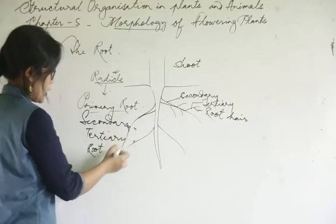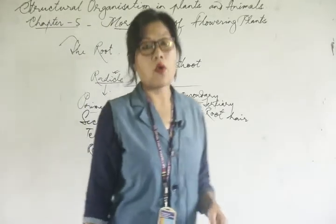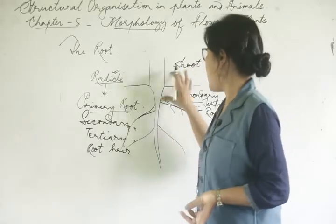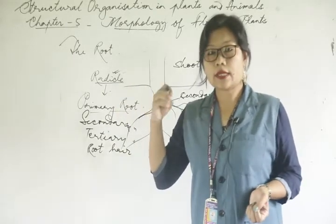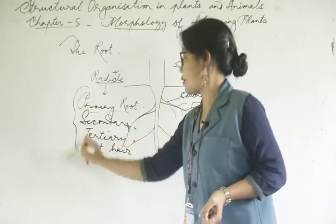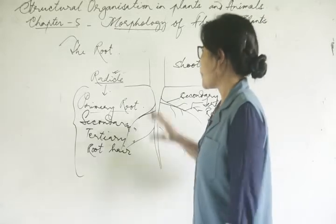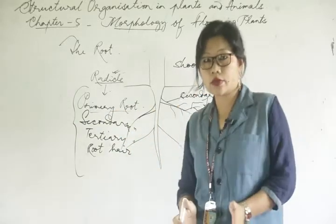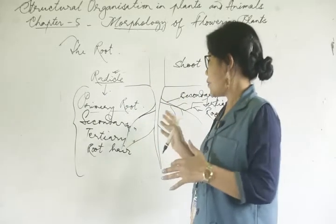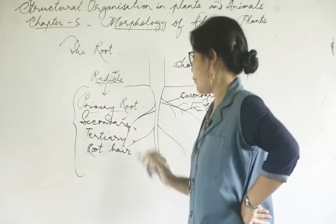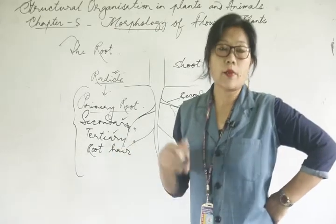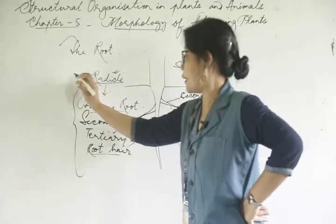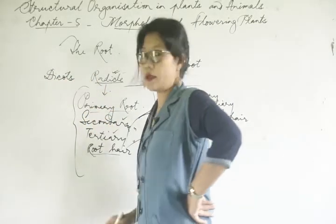These structures — primary root, secondary roots, tertiary roots, and root hairs — are found only in dicots or dicotyledonous plants. From the radicle, there is emergence of a single primary root, and from it many secondary roots, tertiary roots, and root hairs are formed. The main role of absorption of water and minerals is done by these root hairs.